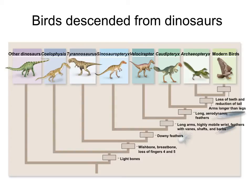We know that birds descended from dinosaurs. Here is the phylogeny of all dinosaurs, including birds, and they all share an ancestry. This was clearly elucidated by fossils that have been discovered, such as Archaeopteryx, which is a dinosaur that had feathers. Using traits from the fossil record plus DNA samples, and looking at the relationships between modern birds and other reptiles, we can see that modern birds are the most direct descendants from dinosaurs.